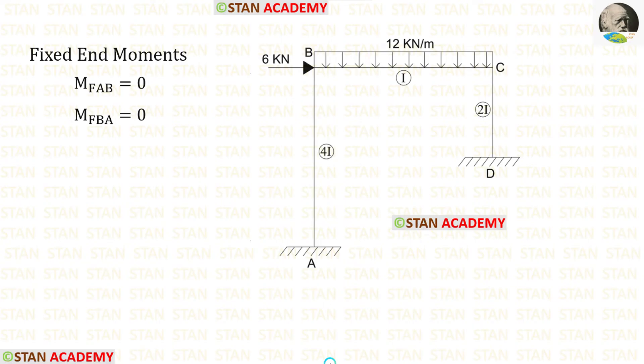Now let us find the fixed end moments. In column AB there is no load, so M of AB and M of BA are both 0.